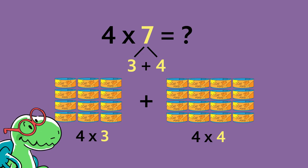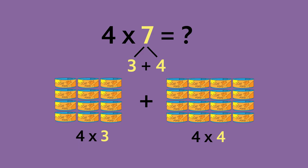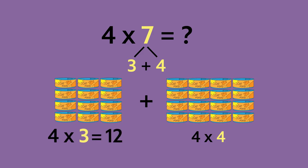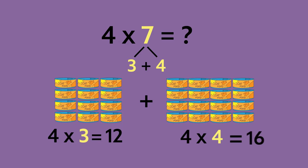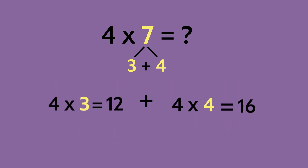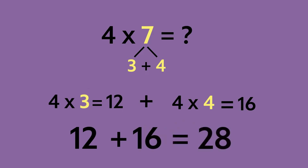Let's think about the product of each one. What is the product of four times three? That's right — four times three is 12. How about four times four? The product of four times four is 16. Now we can add both products back together to solve our original problem. Let's try it out: 12 plus 16 equals 28.